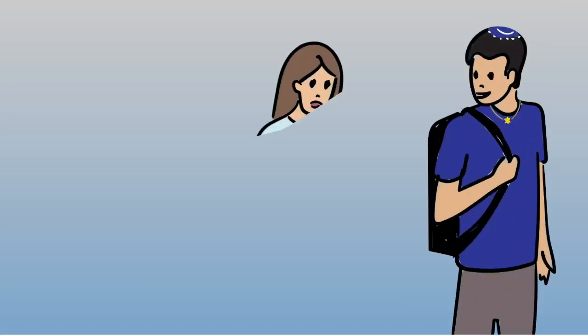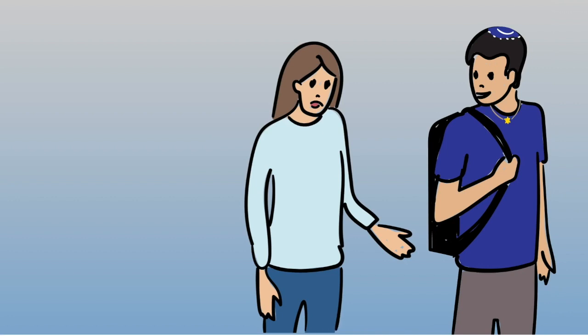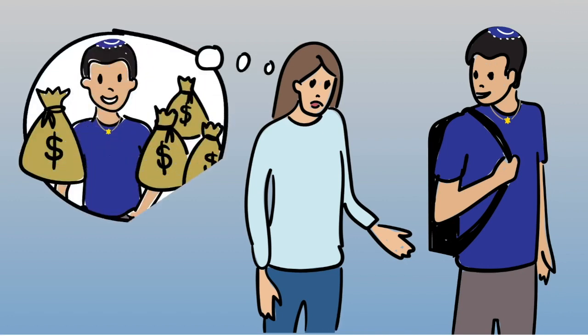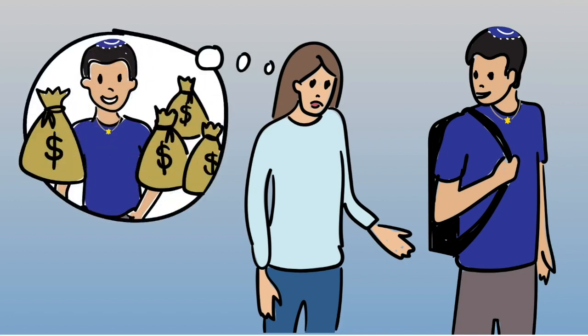Tensions grow when Derek is asked by a fellow student for a loan since she assumes Derek is from a rich Jewish family. Derek politely declines.